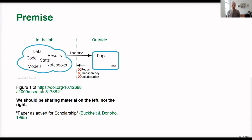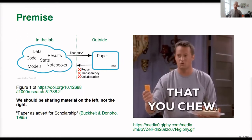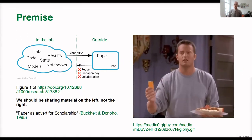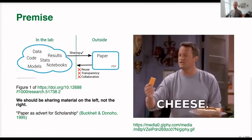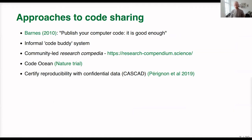What we should do — and what many authors today do, though it's still far from the majority — is share the material on the left, not the one on the right. You might have heard about the idea of having a paper as only the advertisement for the actual scholarship. The situation today is that often researchers write nice words about how their new algorithm works, but that's really only a very bad description of what actually happened.